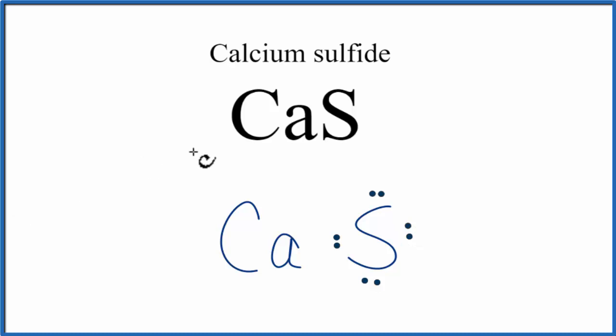Because it's lost 2 valence electrons, it has a 2 plus charge. Sulfur has gained those 2 negative charges, so it's a 2 minus.